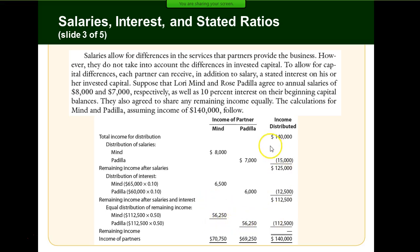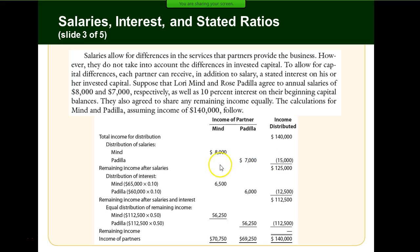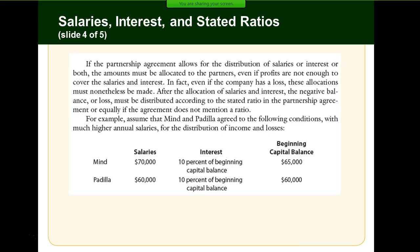We have now distributed the entire $140,000. The allocations are unique: Mind's salary was $8,000, Padilla's was $7,000, and then interest was allocated based on each partner's capital account. There are many ways to allocate income, and it really needs to be spelled out in the agreement.